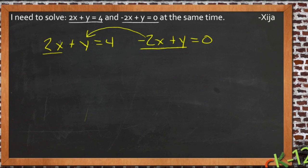Take a look at what happens. We take 2x plus y and we add negative 2x plus y, and our 2x and negative 2x cancel each other out. This becomes 0 and we have y plus y is 2y.